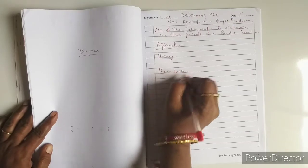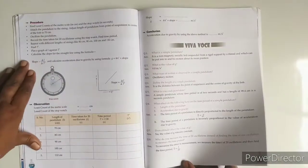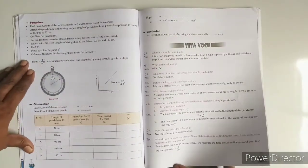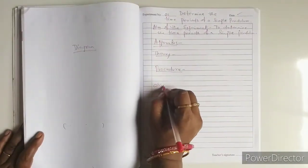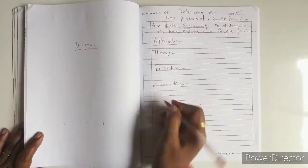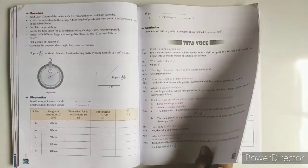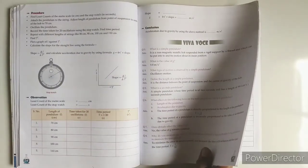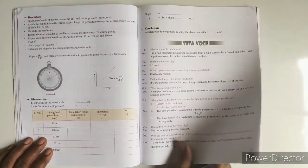Then comes the Procedure section — write down the complete procedure for the experiment. After the procedure comes the Observations section.